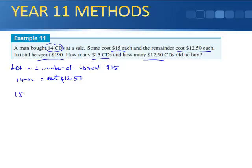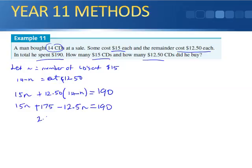So in total he's got 15n plus 12.50 times 14 minus n, and that equals $190. Expanding this, we've got 15n plus 175 minus 12.5n equals $190. So we get 2.5n plus 175 equals $190. 2.5n equals 15.